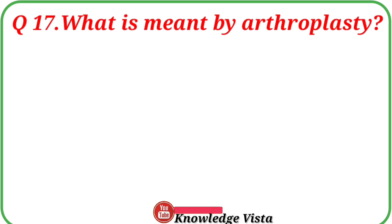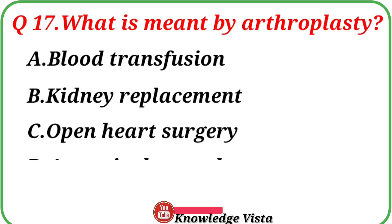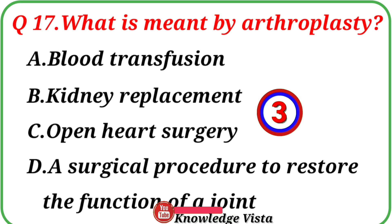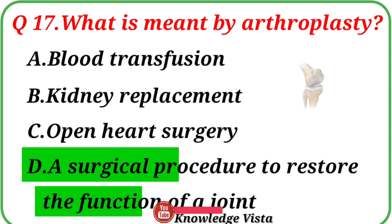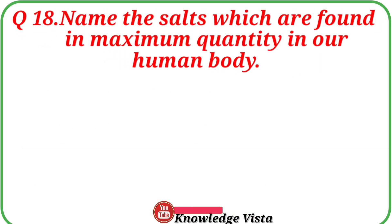Question number 17: What is meant by arthroplasty? Your options are: A. Blood transfusion, B. Kidney replacement, C. Open heart surgery, D. A surgical procedure to restore the function of a joint. Correct answer is option D. Arthroplasty is a surgical procedure to restore the function of a joint.